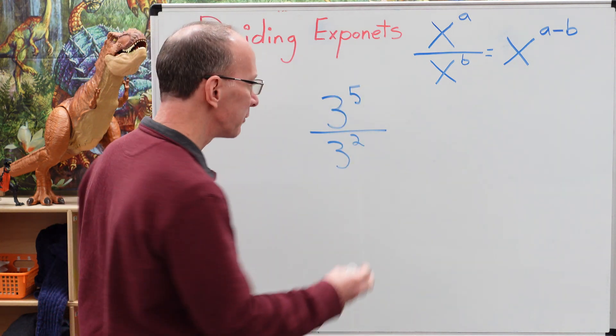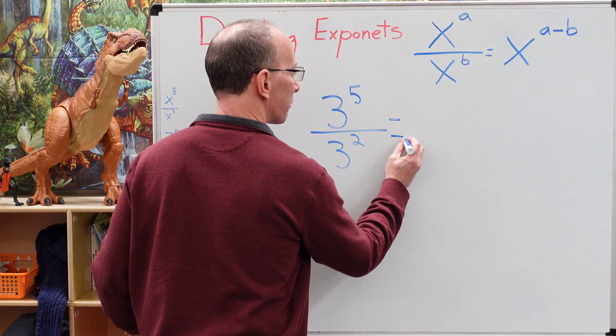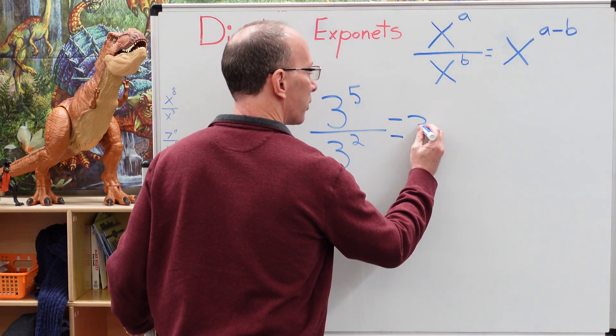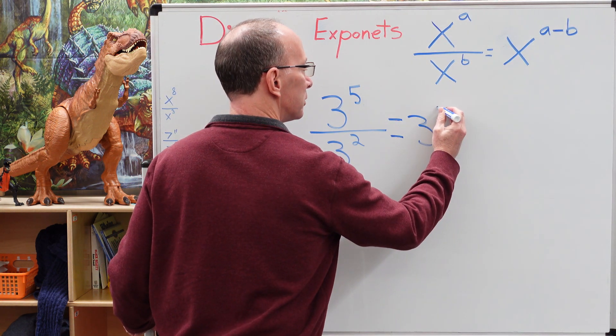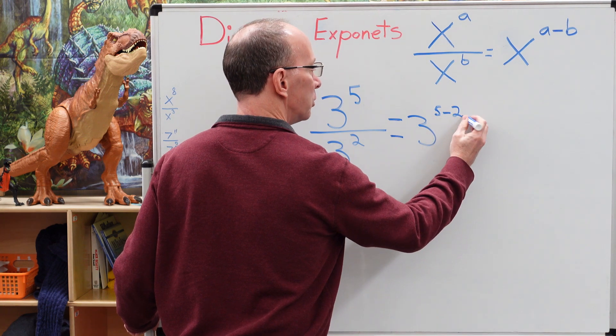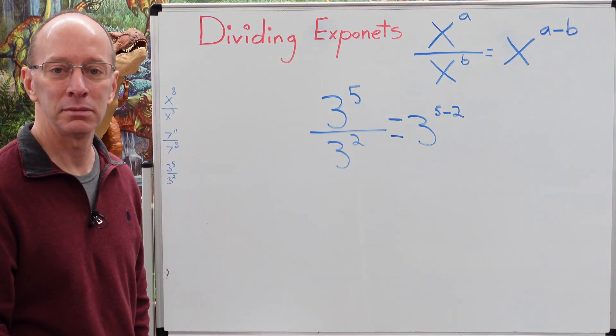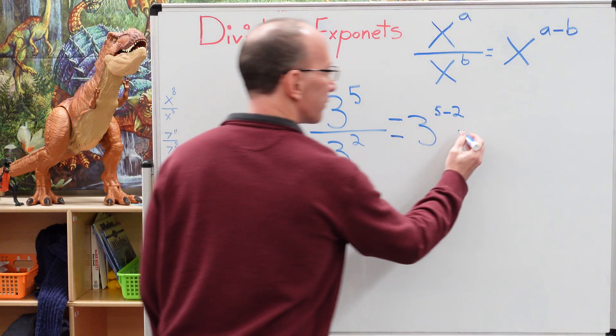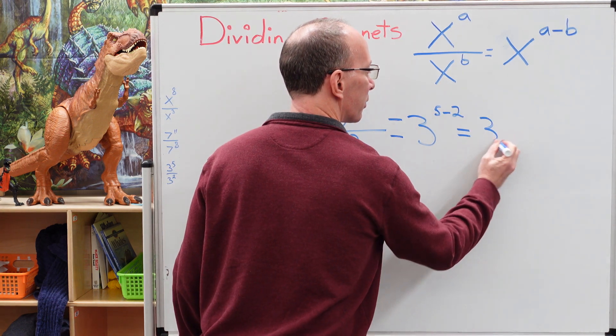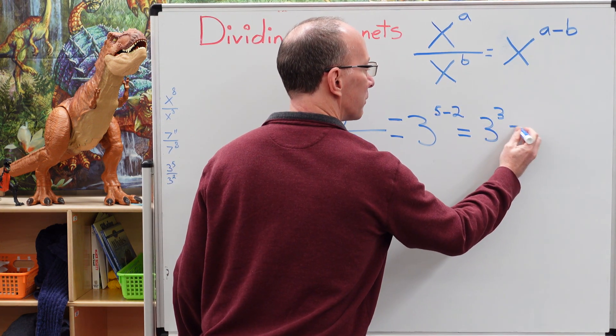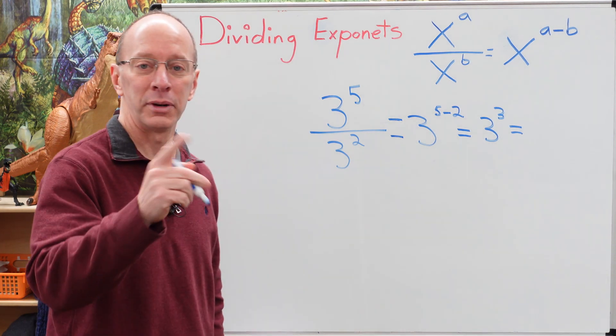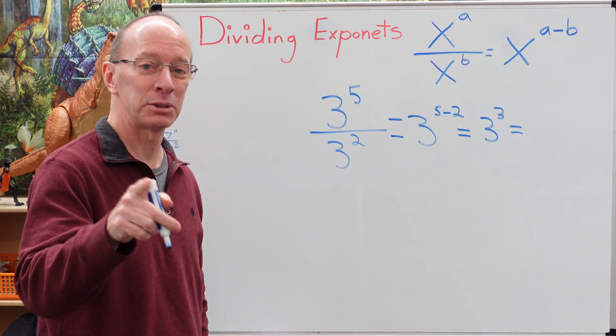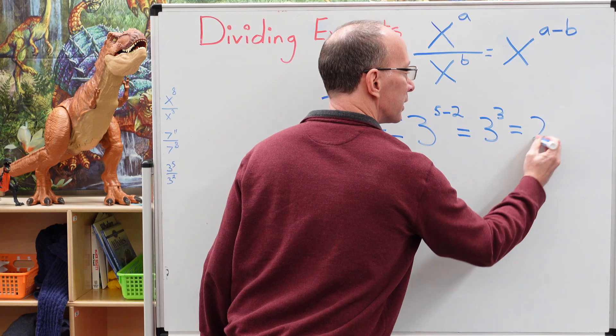a minus b. Let's go ahead and rewrite this. We have 3 to the power of 5 minus 2. 5 minus 2 is 3. So we have 3 to the third power. 3 times 3 is 9. 9 times 3 is 27. All right.